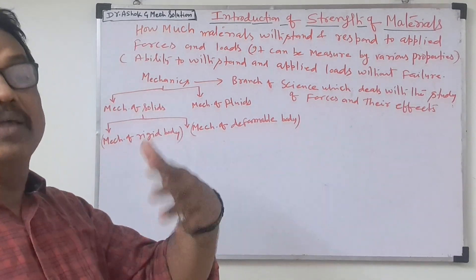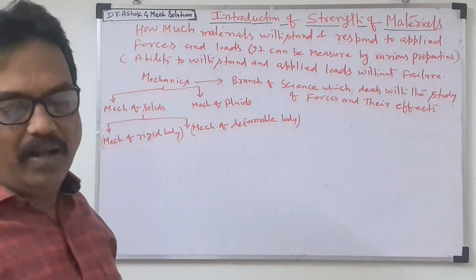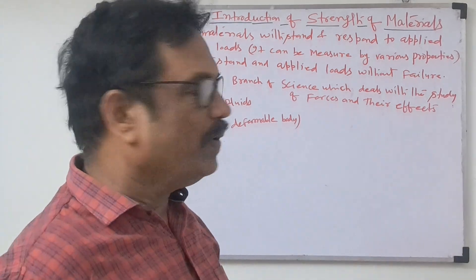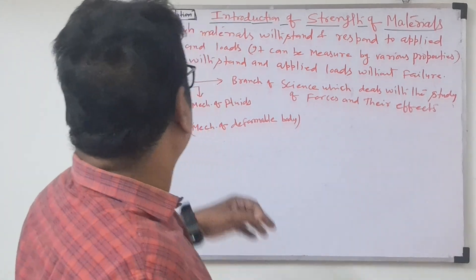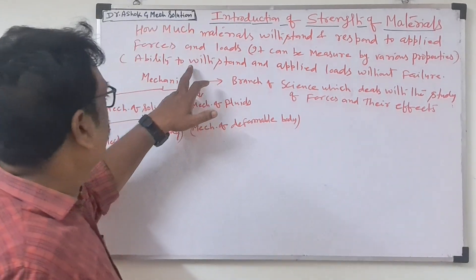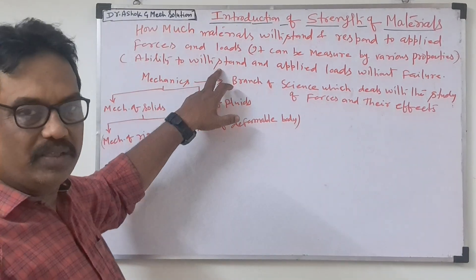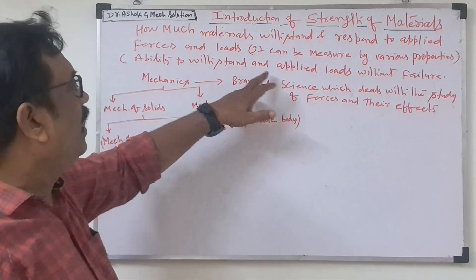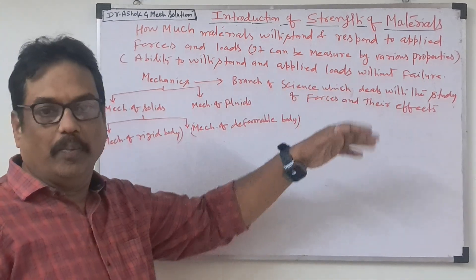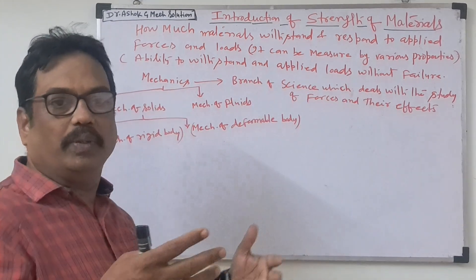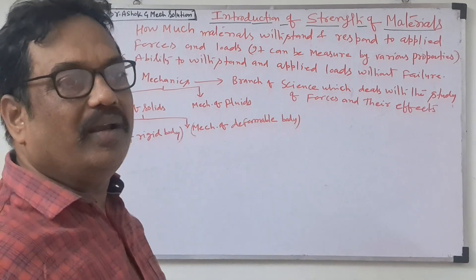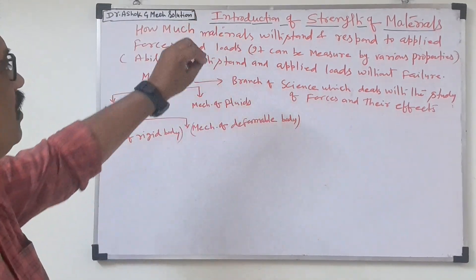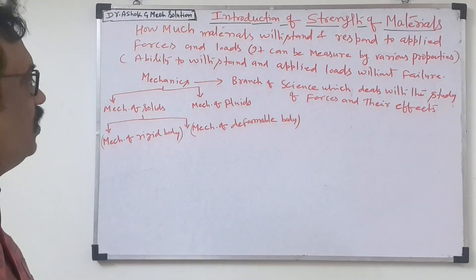Without failure means it will go to the plastic limit. Plastic means the material will change its shape and size. Ability to withstand — how can they survive when the load is applied — without failure, without getting disorder. These are the basic concepts for strength of materials.